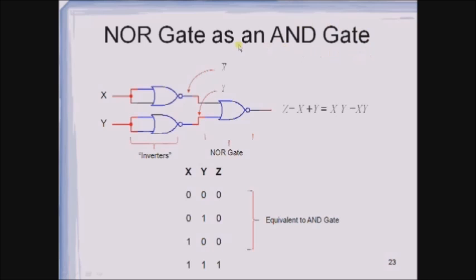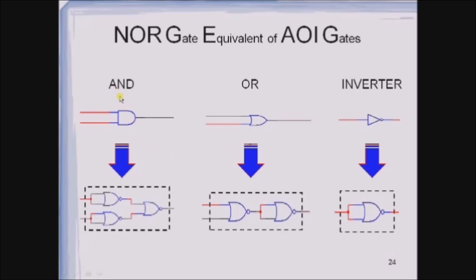Let us represent an AND gate with the help of NOR gates. I take two NOR gates with their inputs tied — these act as inverters — so the outputs are X̄ and Ȳ. These are given as inputs to one more NOR gate. The output is (X̄ + Ȳ)̄, and applying De Morgan's theorem gives X · Y. This truth table and expression resemble the AND gate. Here you can see the equivalence of AND, OR, and inverter with the help of NOR gates.